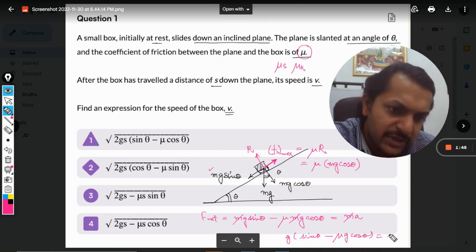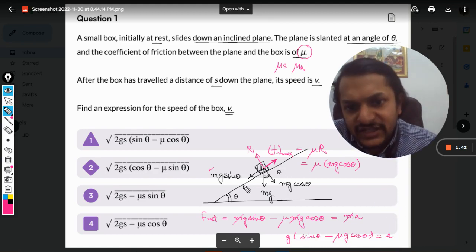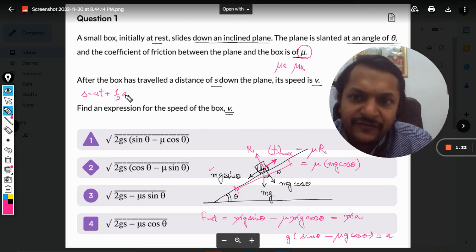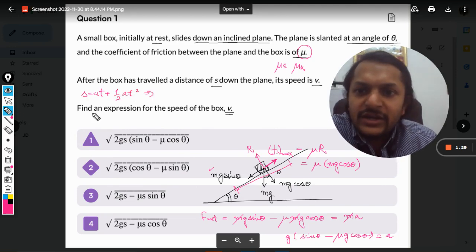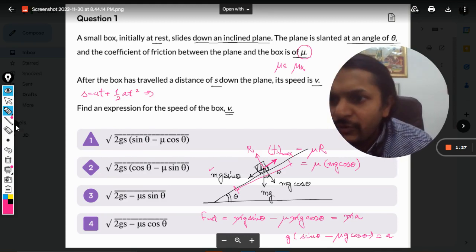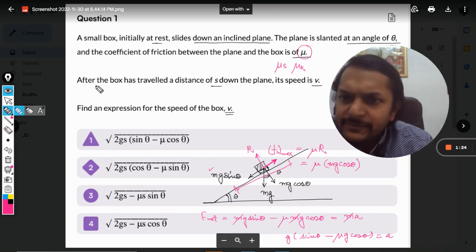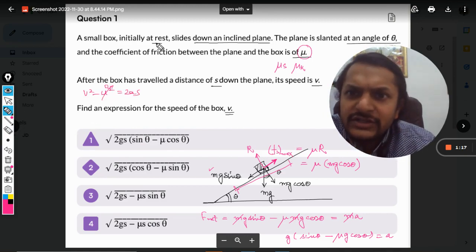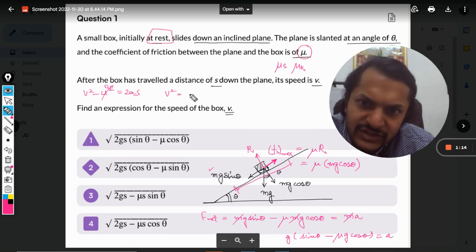Now it has covered a distance of s down the plane, from this point to this point. We're going to apply the formula s equals ut plus half at squared. We wanted to find velocity, so v squared minus u squared equals 2as. U will be zero because it started at rest, so final velocity squared is 2 into s, and a will be